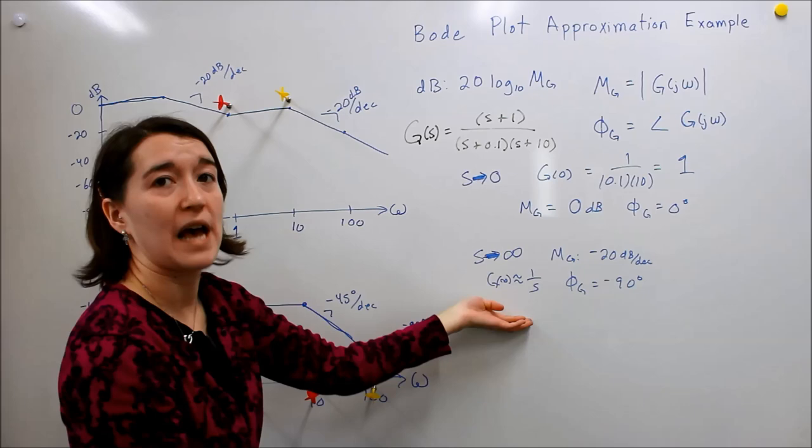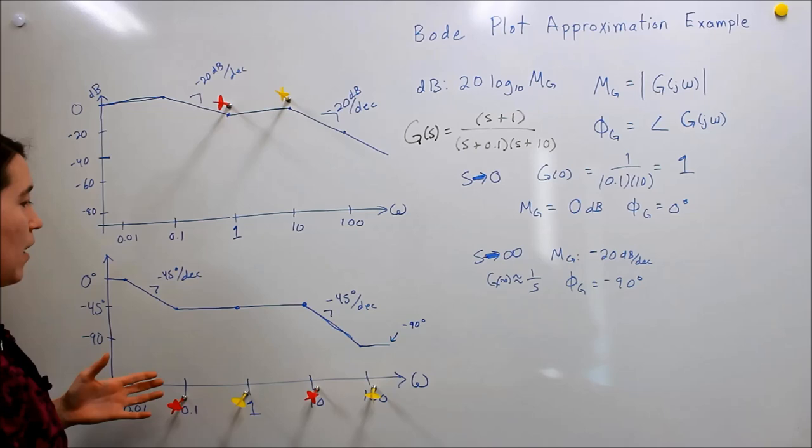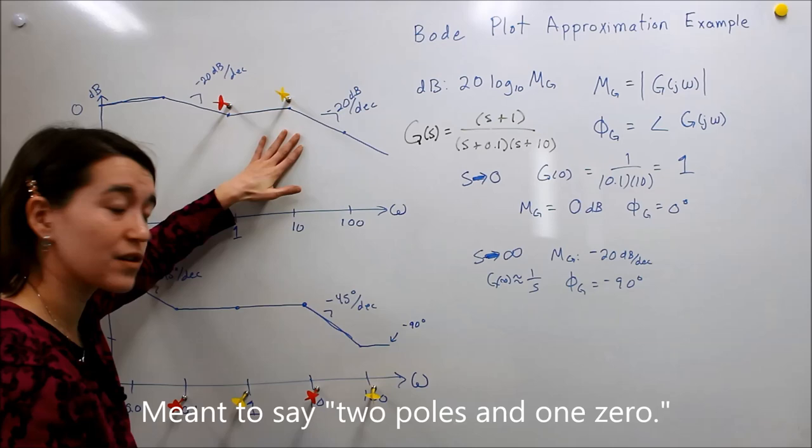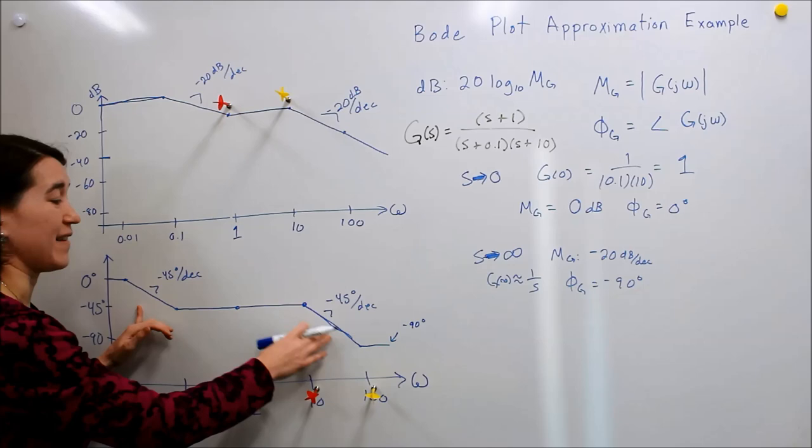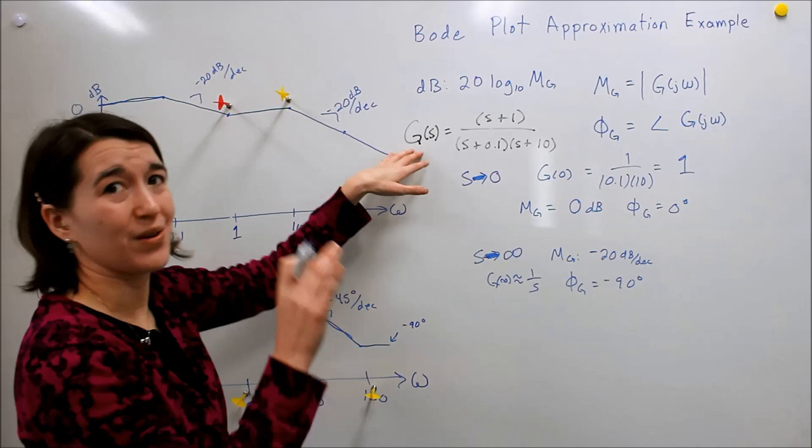So we looked at the effects of each of the two poles and the zero in the magnitude of our frequency response, and how each influences approximately the phase. That's how we approximate the frequency response for a transfer function like this.